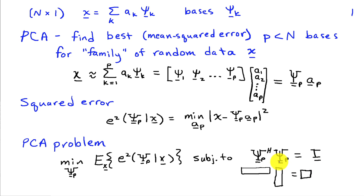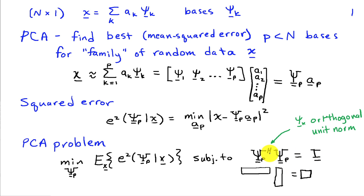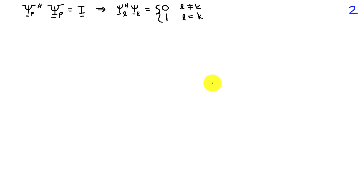Because psi_p is an n-by-p matrix with p smaller than n, psi_p conjugate transpose is a short and wide matrix, and psi_p is tall and thin, and their product gives a smaller square identity matrix. This condition means the individual basis vectors psi_k are orthogonal and have unit norm: psi_l^H times psi_k equals 0 when l ≠ k, and 1 when l = k.